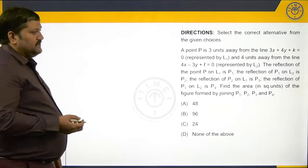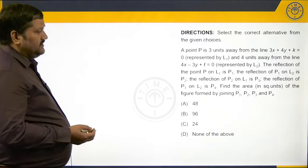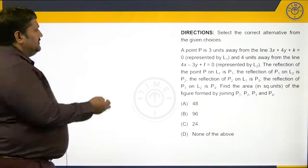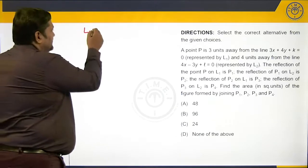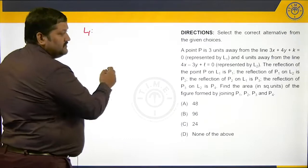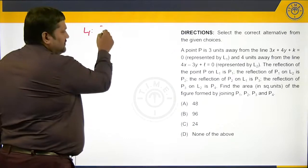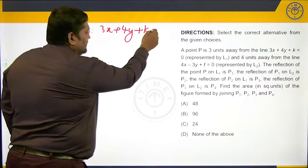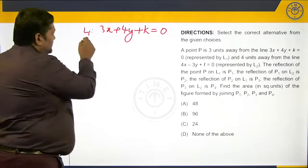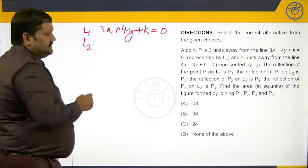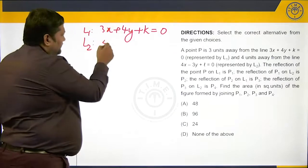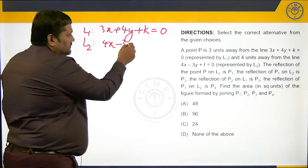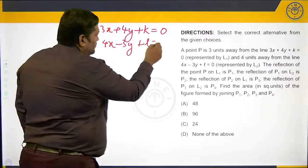Let us see what the two lines are. Line 1 is 3x plus 4y plus k equals 0, and line 2 is 4x minus 3y plus L equals 0.